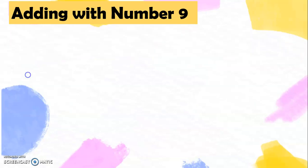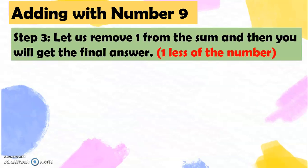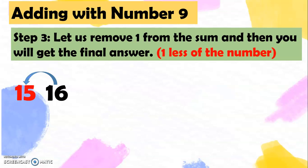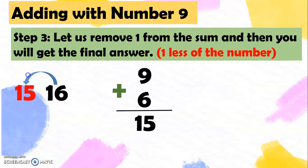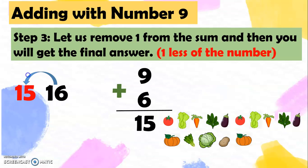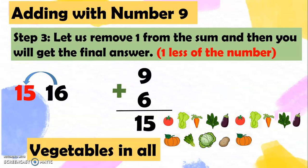Now let's go to step 3. For step 3, let us remove 1 from the sum and then you will get the final answer — we're going to use 1 less of the number. So we have the sum 16, and let's think of the number that is 1 less than 16. Very good, it's 15. So 9 plus 6 equals 15. The two children harvested 15 vegetables in all. That's how we do adding with number 9.